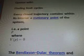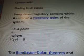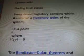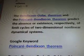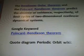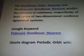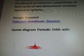Every closed trajectory contains within its interior a stationary point of the system, i.e. a point P where VP equals zero. The Bendixson-Dulac Theorem and the Poincaré-Bendixson Theorem predict the absence or existence, respectively, of limit cycles of two-dimensional non-linear dynamical systems.